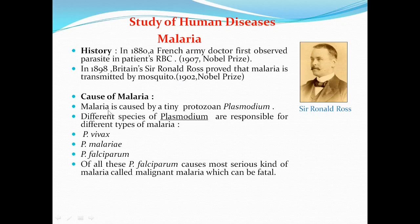Cause of malaria: Malaria is caused by a tiny protozoan named Plasmodium. There are different species of Plasmodium responsible for different types of malaria. These are Plasmodium vivax, Plasmodium malariae, and Plasmodium falciparum. Of these, Plasmodium falciparum causes the most serious kind of malaria called malignant malaria, which can be fatal.